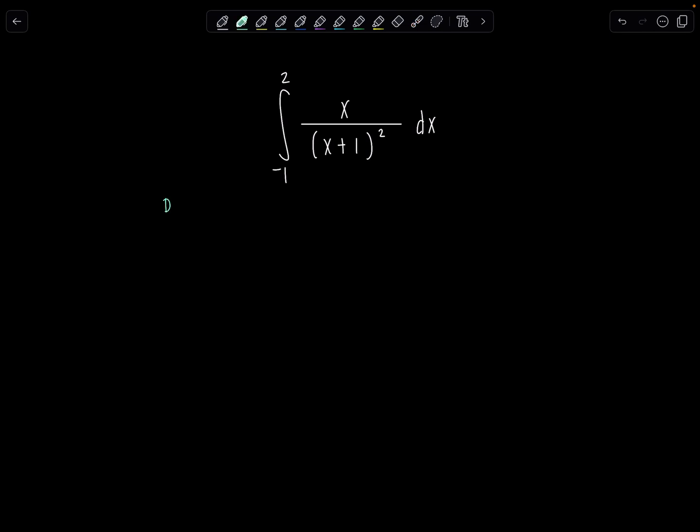So I'm going to point out since the integrand is discontinuous at x equals negative 1, I'm going to replace this negative 1 with a dummy variable. Usually we use t and we're going to write it as the limit as t approaches negative 1. And then this is always tricky for some students to figure out from which side. It's from the right.